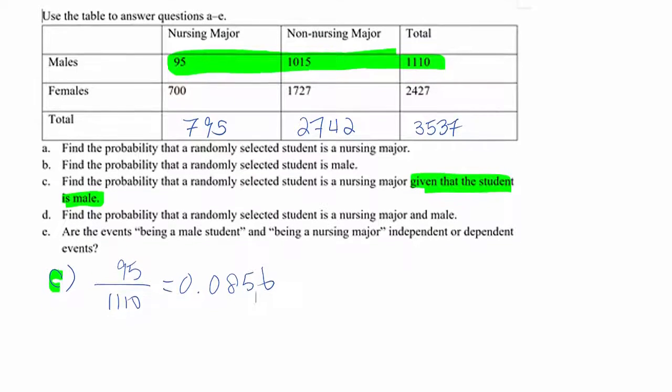Now D. Find the probability a randomly selected student is a nursing major and male. It shows that nursing major and male. There's no condition given, which means this over this basically.